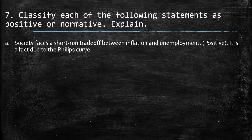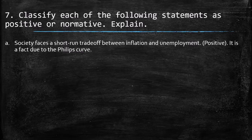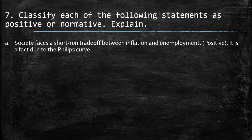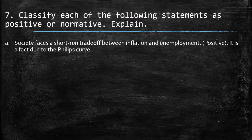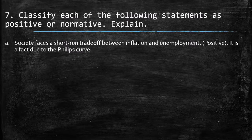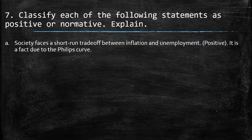Seventh exercise: classify each statement as positive or normative. First — society faces a short-run trade-off between inflation and employment. This is positive — it's descriptive and factual, with no subjective position. It refers to the Phillips Curve, which is a trade-off between inflation and employment based on data: high inflation tends to coincide with low unemployment in the short run, and vice versa.